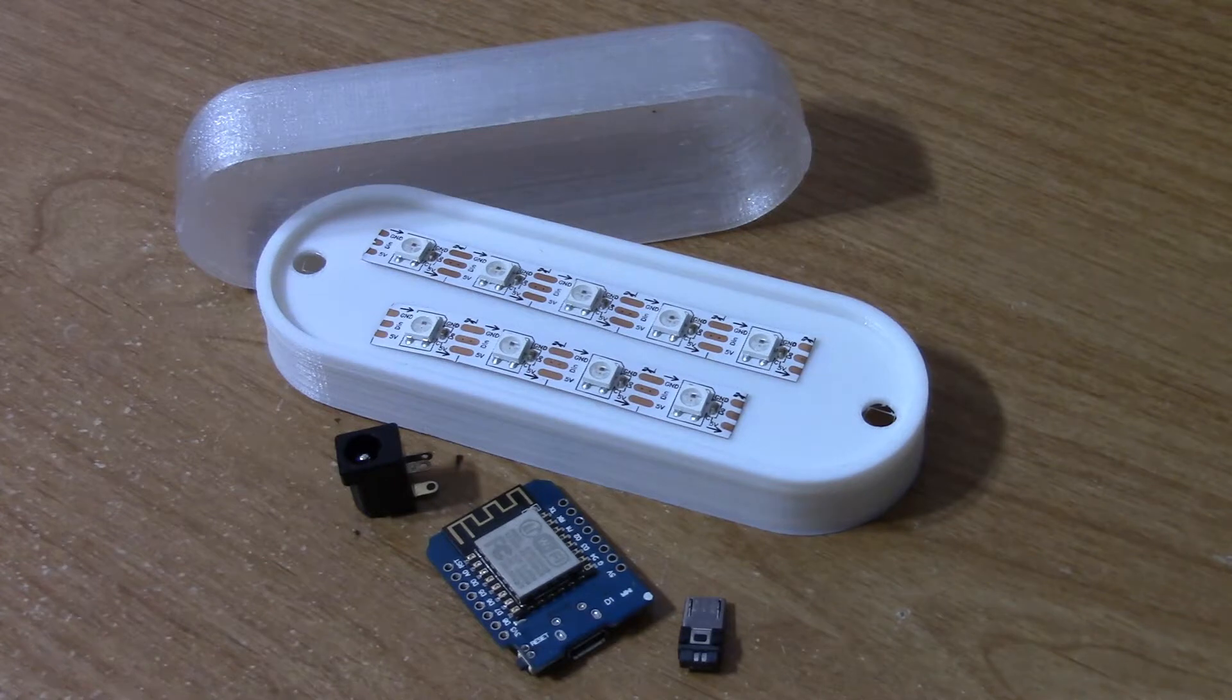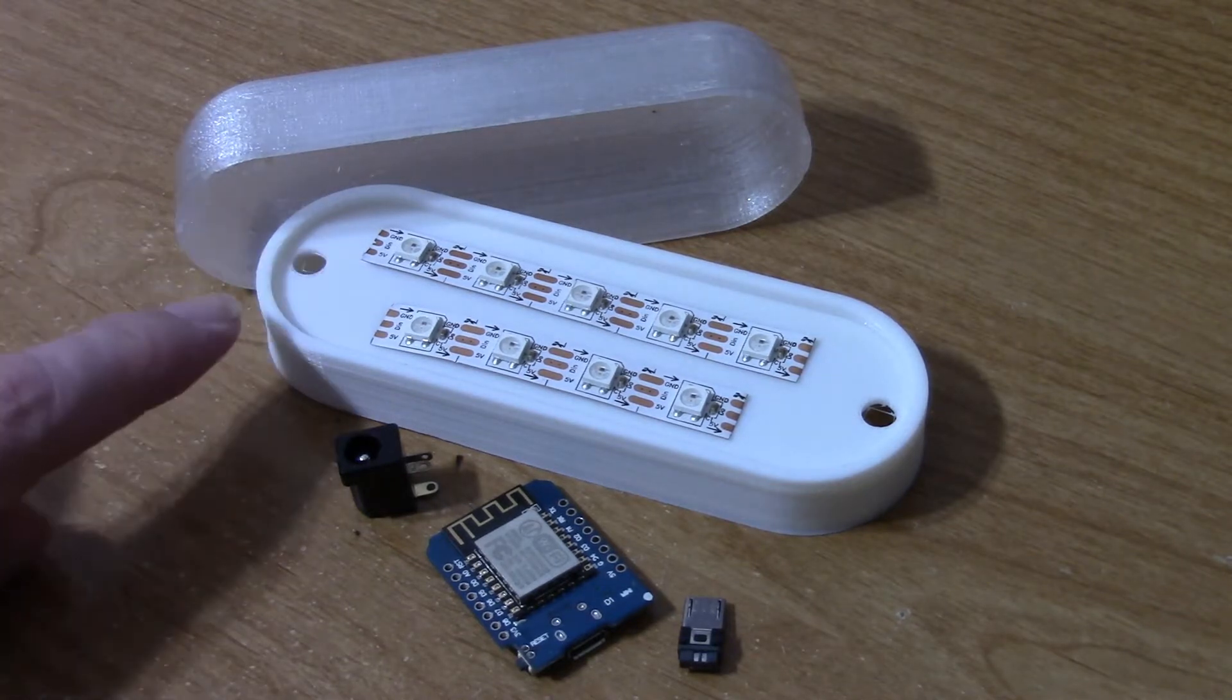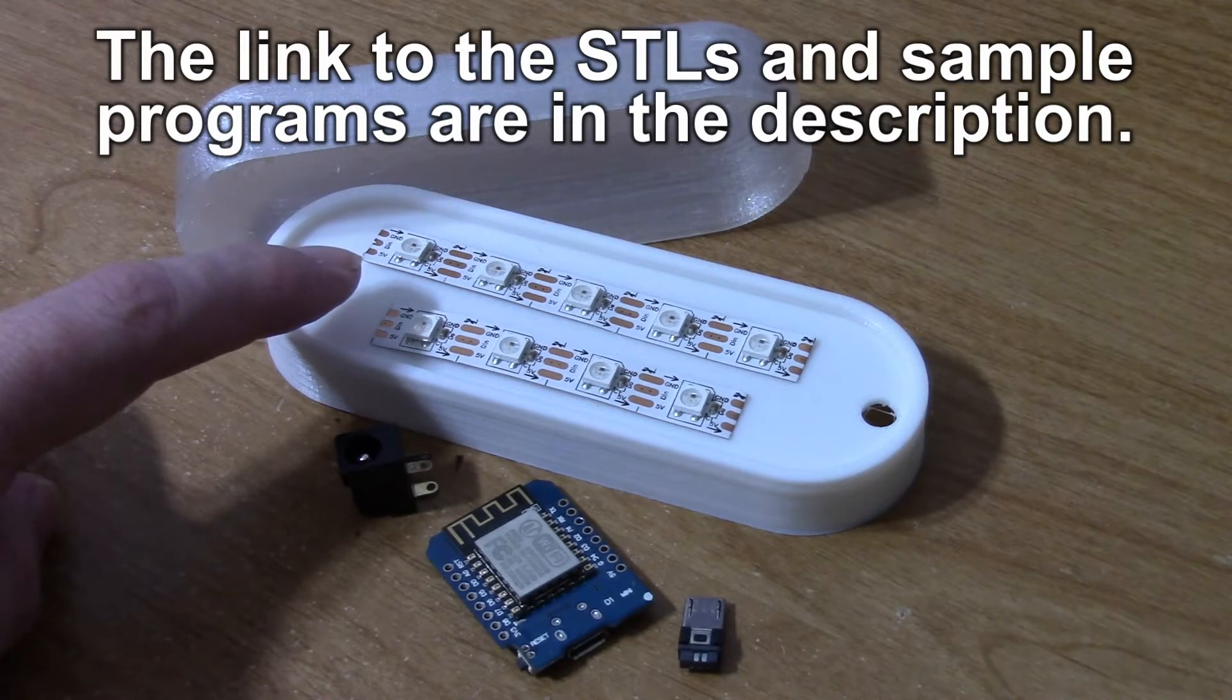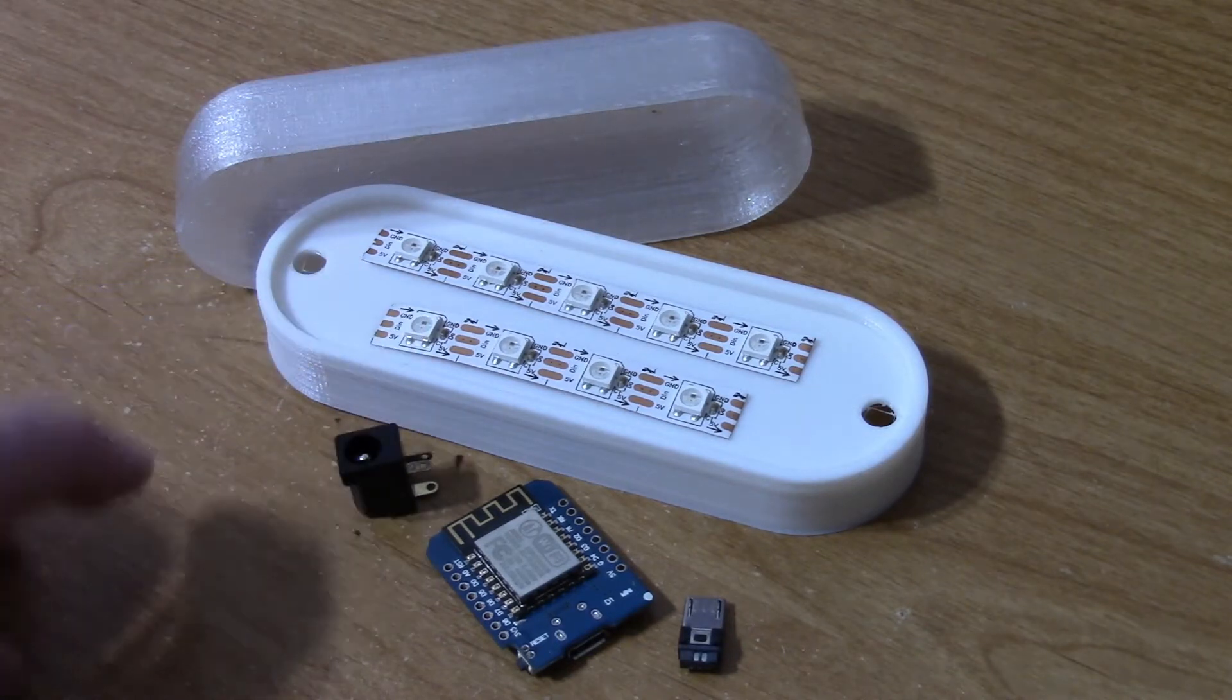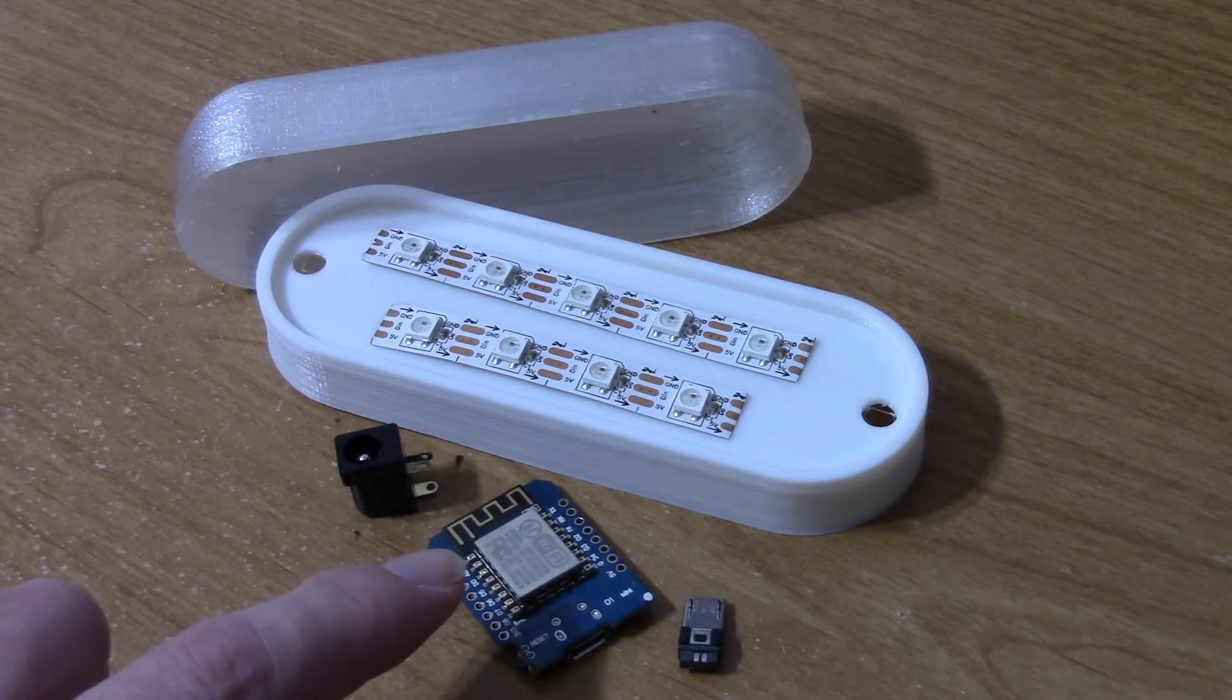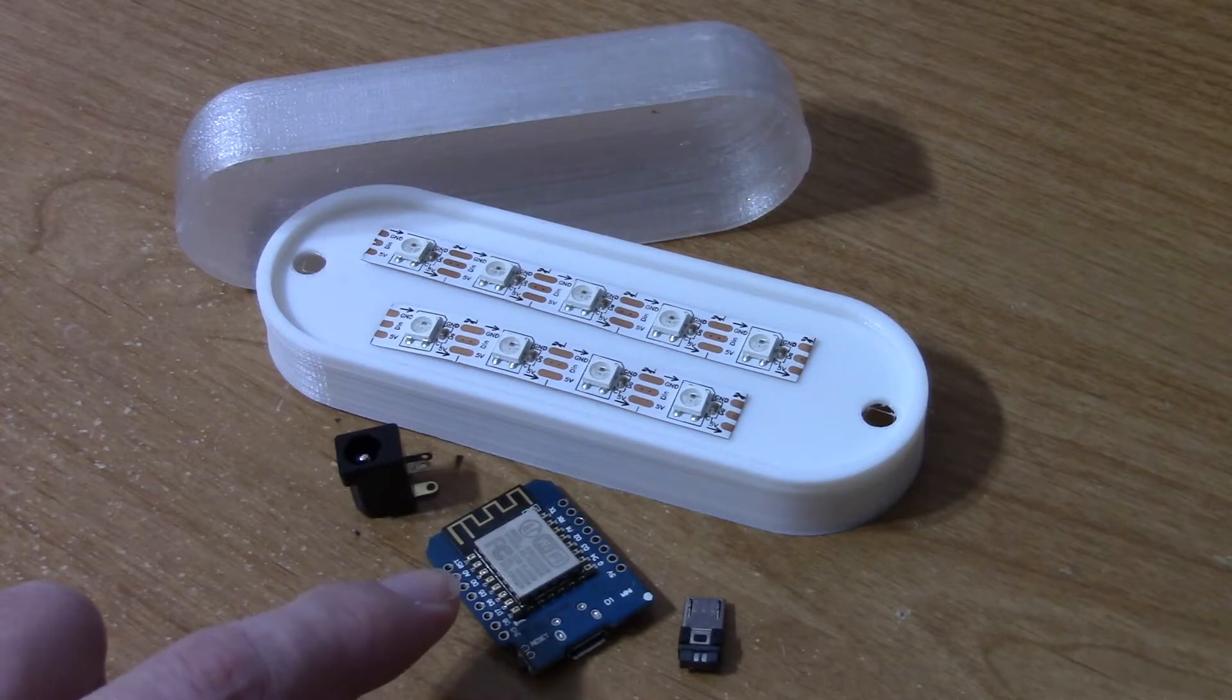This is a programmable nightlight. It uses a couple of 3D printed components, a few RGB LED strip components, a mini D1. This is an Arduino compatible based off of the ESP8266.